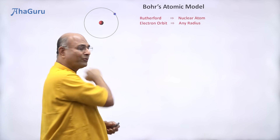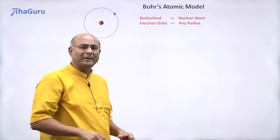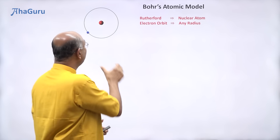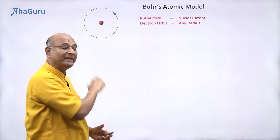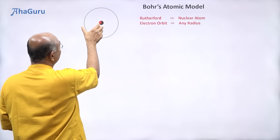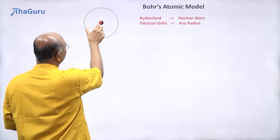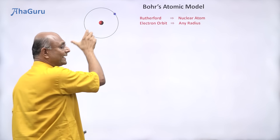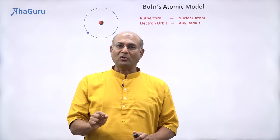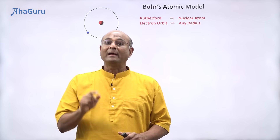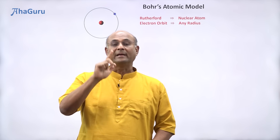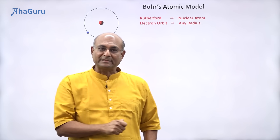In Rutherford's model, the electron orbit could be of any size. Basically, the radius could be anything that the electron wanted. It could be at this radius, slightly smaller, or slightly larger. And because the electron is revolving around in a circular orbit, it has a centripetal acceleration.